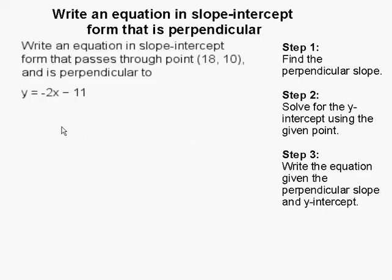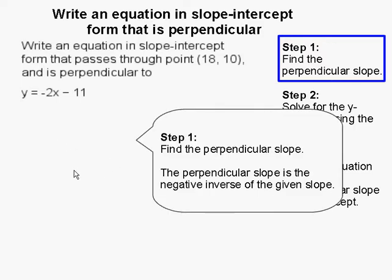Write an equation in slope-intercept form that passes through point (18, 10) and is perpendicular to y = -2x - 11. The first step in writing this perpendicular equation is to find the perpendicular slope.